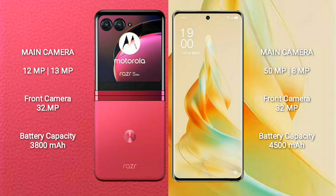Motorola RAZR 40 Ultra features a dual rear camera setup of 12MP plus 13MP, a 4MP periscope zoom camera, and a 32MP front camera. OPPO Reno 9 Pro has a dual rear camera setup of 50MP plus 8MP and a 32MP front camera.